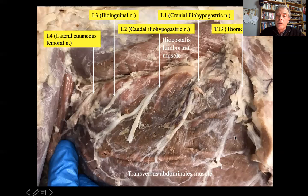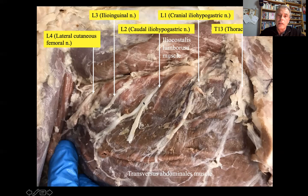Other nerves at the level of the abdominal region include the thoracolumbar T13, the cranial iliohypogastric nerve, L1 and L2 forming the caudal iliohypogastric nerve, the ilioinguinal from L3 and L4, and the lateral cutaneous femoral nerve.